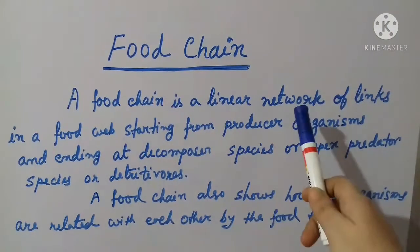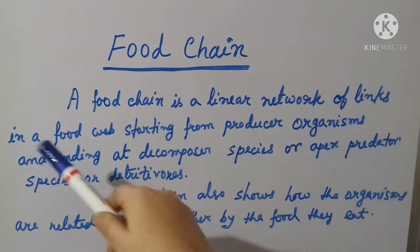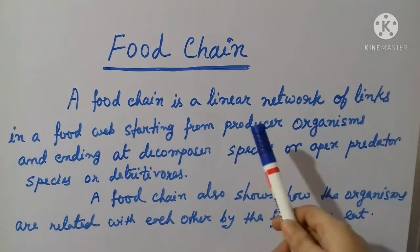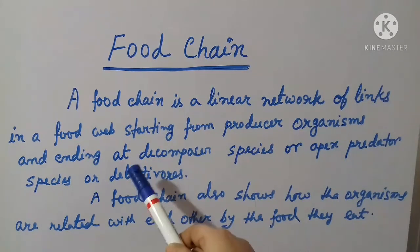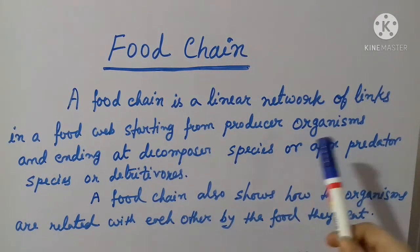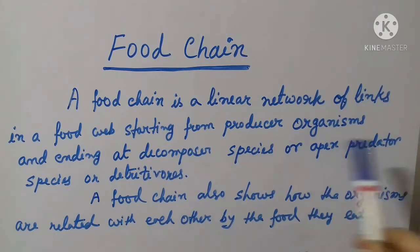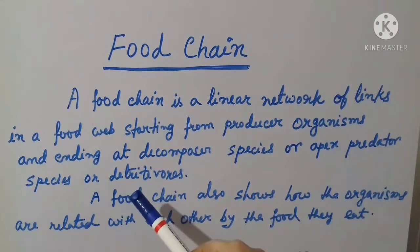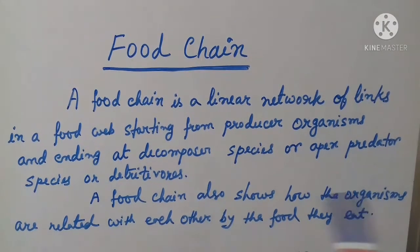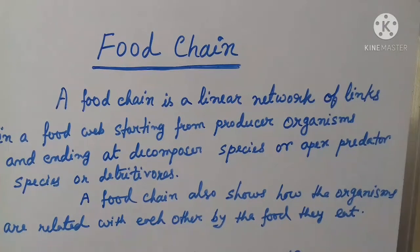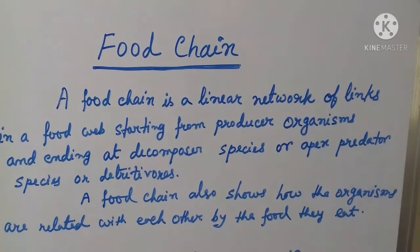A food chain is a linear network of links in a food web starting from producer organisms and ending at decomposer species, apex predator species, or detritivores. A food chain also shows how organisms are related with each other by the food they eat.